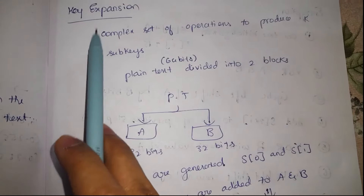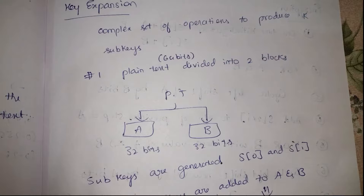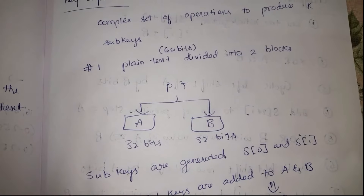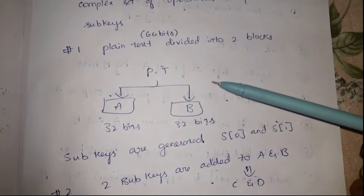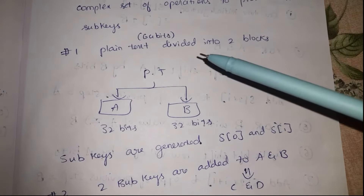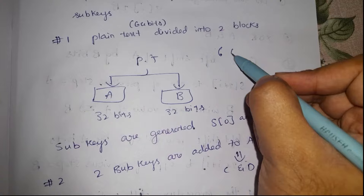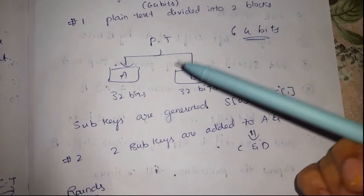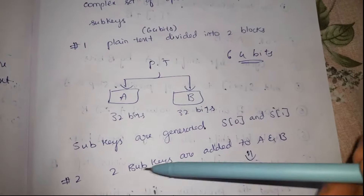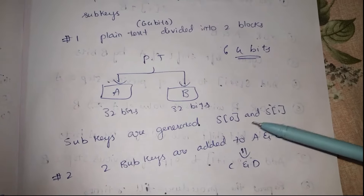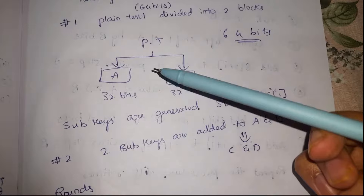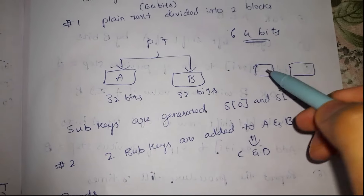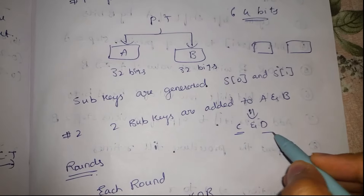In the key expansion stage, it performs a complex set of operations to generate k number of sub-keys. The plain text — typically 64 bits — is divided into two blocks of 32 bits each. Based on the key expansion algorithm, the generated sub-keys are combined, basically added, to form new blocks with new values, which we label as c and d.